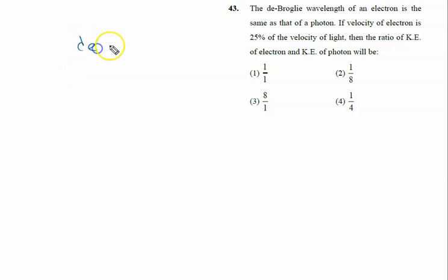The de Broglie wavelength of an electron is same as that of a photon. The electron is a particle and photon is energy. If velocity of the electron is 25% of velocity of light, that is c by 4, then find the ratio of the kinetic energy of the electron and kinetic energy of the photon.